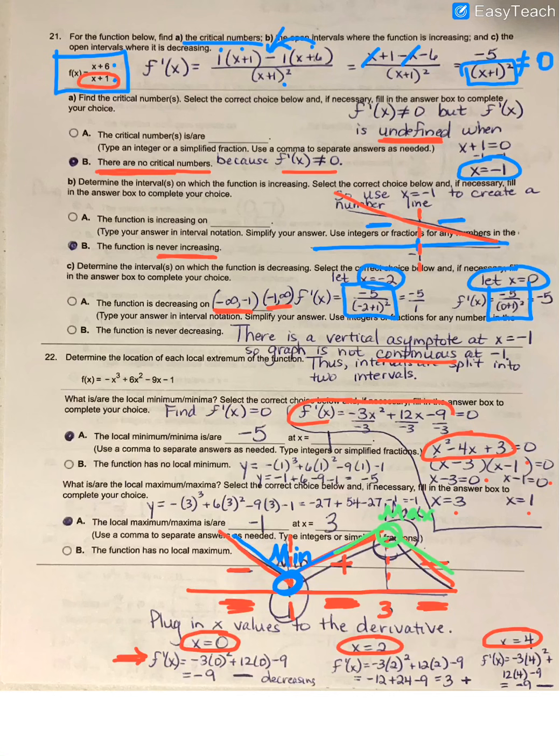So for this particular graph, we've got a minimum value when x is equal to 1, and we have a maximum value when x is equal to 3. Now they're also wanting you to find that actual value.